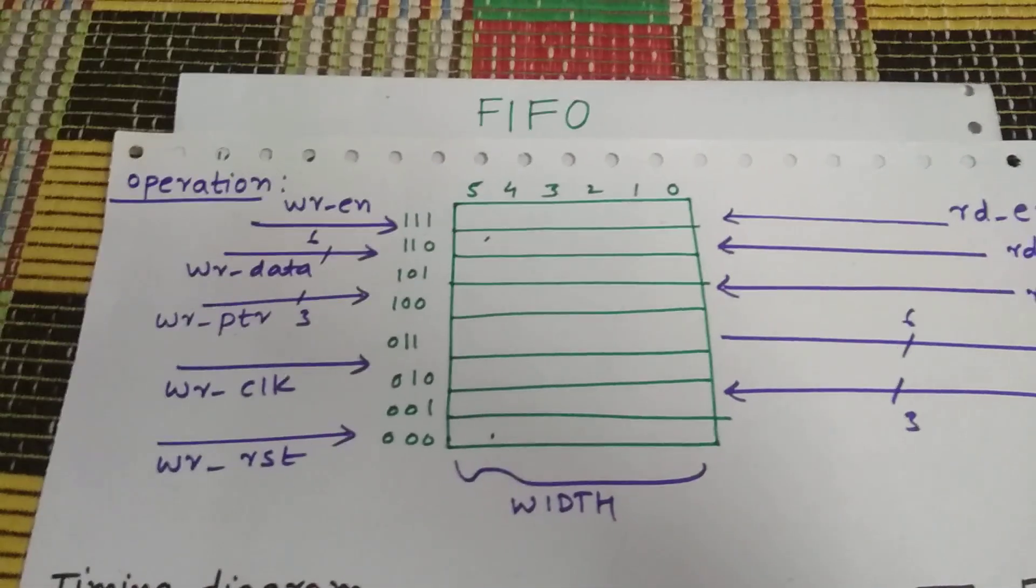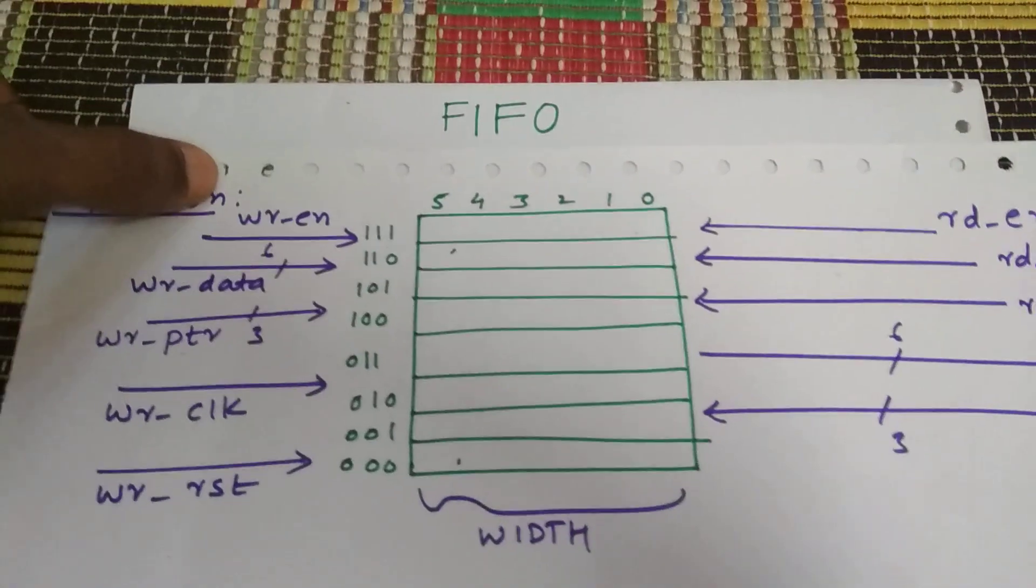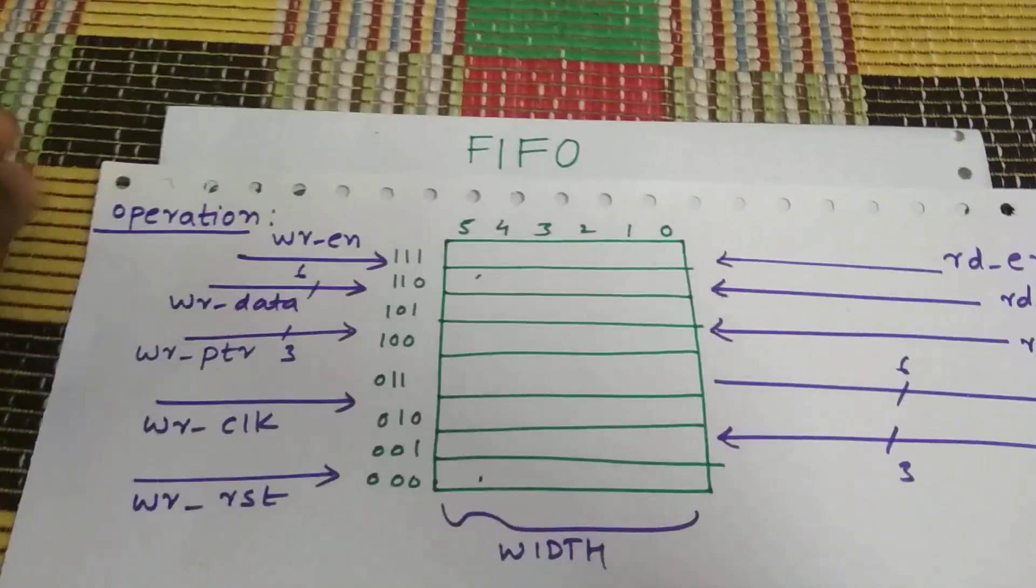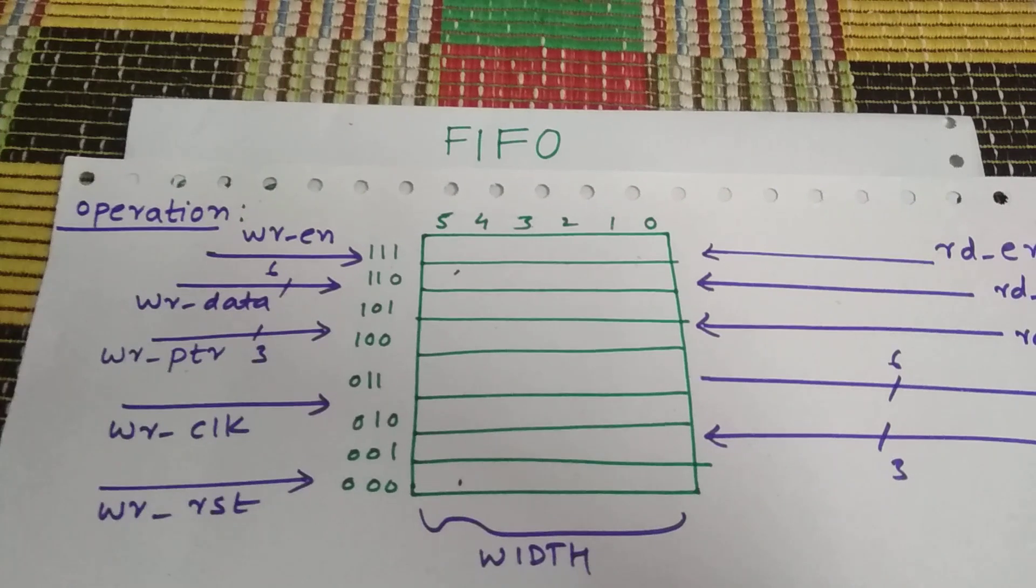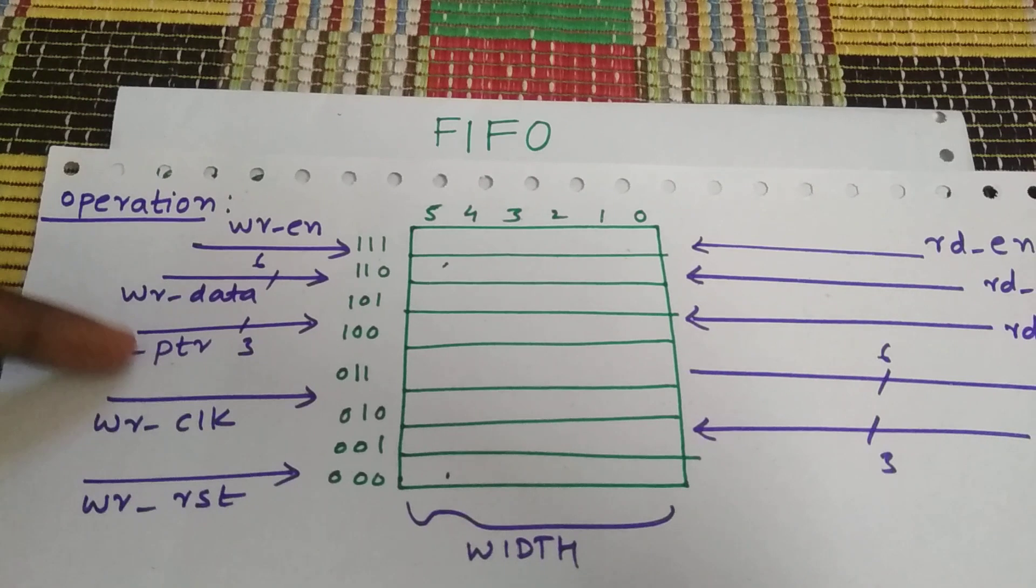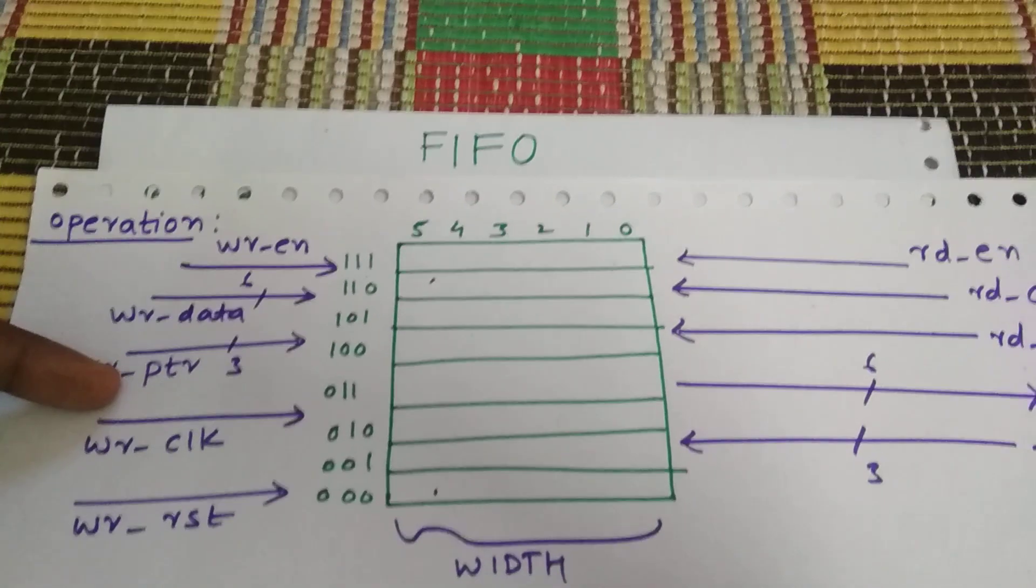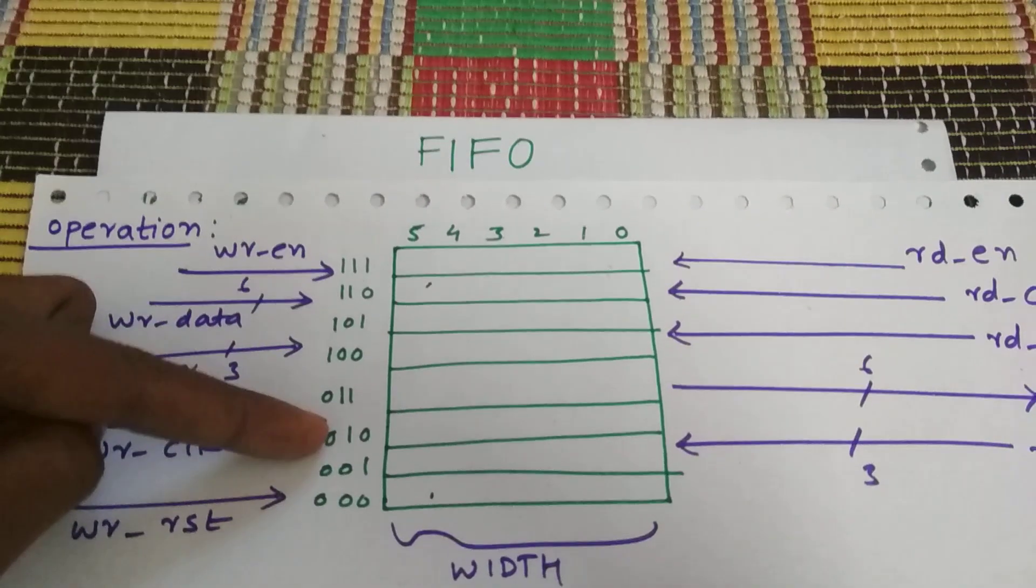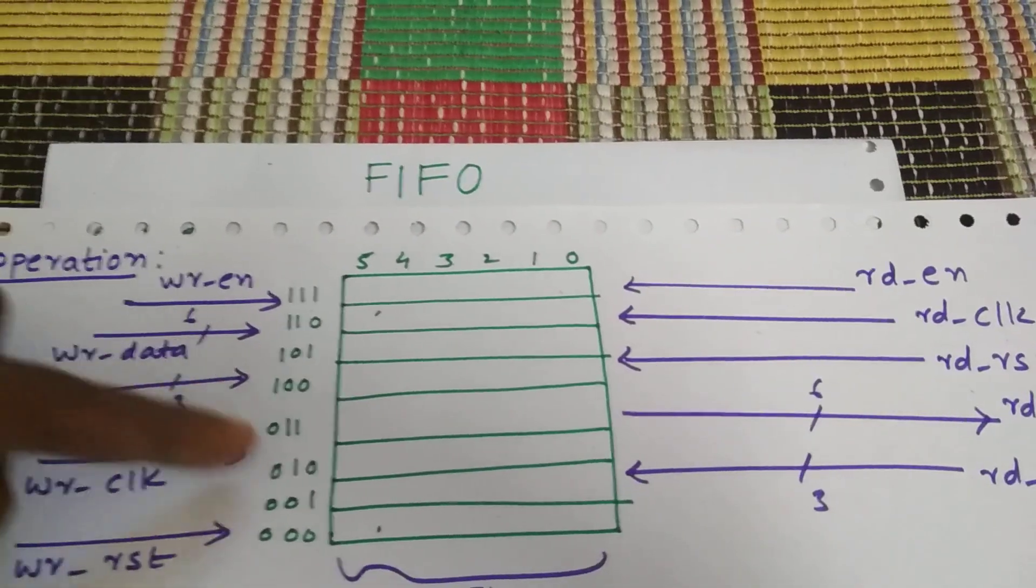So first, whenever a write is done, write enable should be high. So write enable will go high. Then after, write data will be written into the location where write pointer is pointing. So if write pointer is pointing to 010, the data will be written by write data in 010.